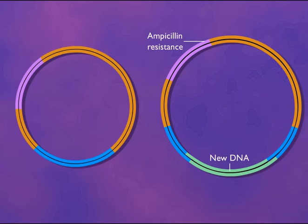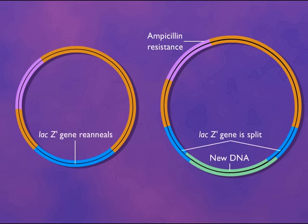To identify cells that contain plasmids that have incorporated foreign DNA, a second marker gene is needed on the vector. This second marker contains the restriction enzyme site within its nucleotide sequence.